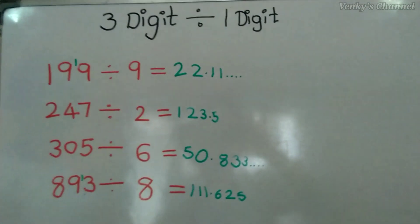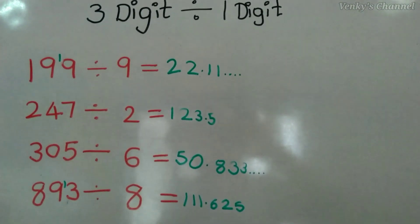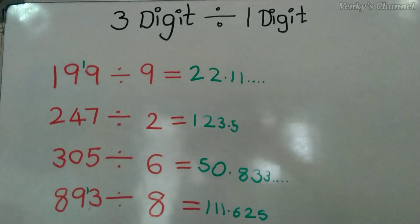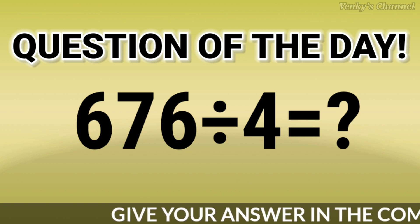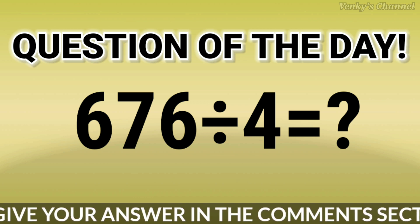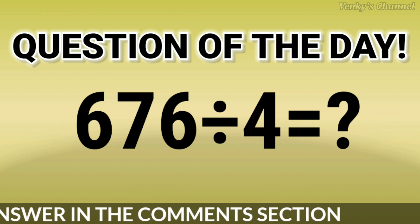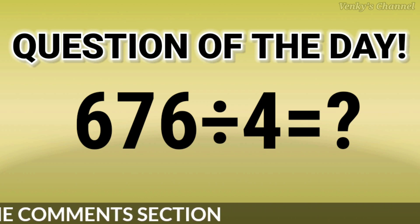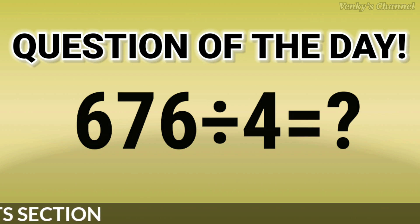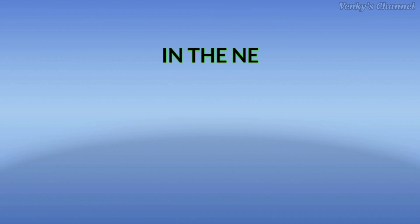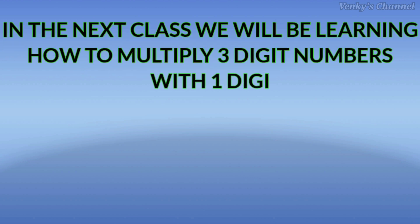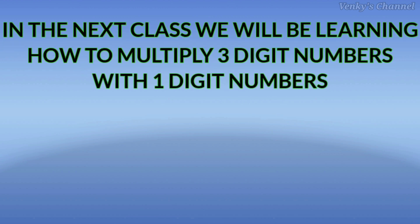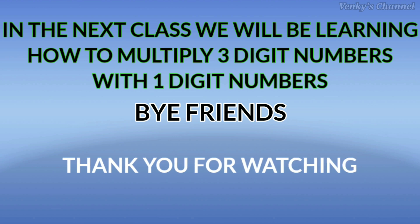In this way we can solve three-digit divided by one-digit problems in a very simple manner. By now you might have understood that this method is simpler than the abacus method. Today's question of the day is 676 ÷ 4 — give your answer in the comment section. Try to do it using the same method. In the next class we'll learn how to multiply three-digit numbers with one-digit numbers. Bye friends, thank you for watching!